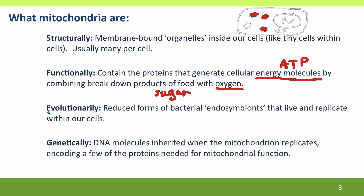Evolutionarily, mitochondria are shrunken, simplified forms of bacteria — bacteria that live and replicate within our cells. And because that's what they do, they're called endosymbionts. Symbiont because they're in a symbiotic relationship with us — they live with us and help us. And endo because they're inside our cells. They're not like most of our microbiome, which is bacteria that live outside our cells on surfaces, particularly in our gut and on the surfaces of our skin.